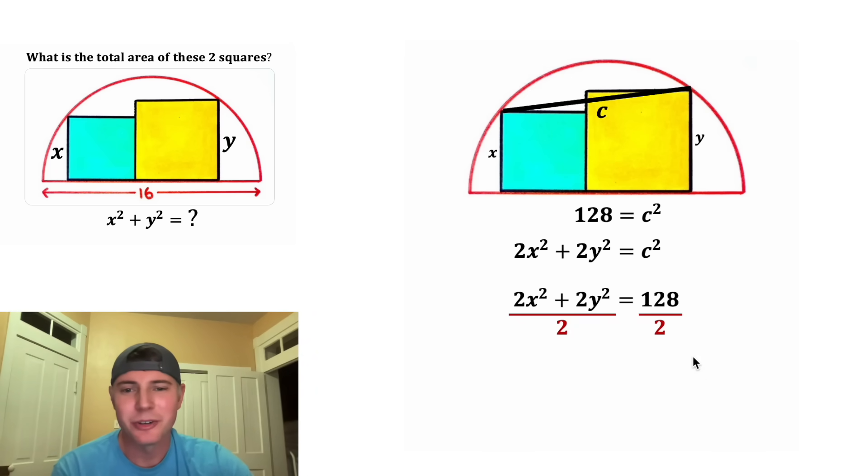And next, let's divide everything by 2. That'll give us x squared plus y squared is equal to 64. And x squared plus y squared is what we were trying to solve for. That is the area of the two squares. So the answer is 64 square units. Let's put a box around it.